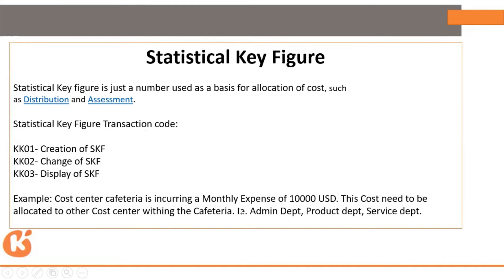For example, consider monthly expenses of $10,000 incurred from a cost center like cafeteria or cost center C001D. When this cost needs to be allocated to other cost centers — such as manufacturing, admin, and service departments — we allocate it based on a statistical figure, like number of employees. For example, manufacturing has 100 employees, service has 300 employees, and another unit has 400 employees.